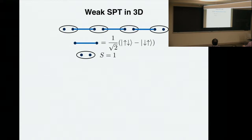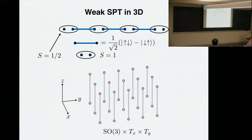I want to interpret the Lieb-Schultz-Mattis theorem as a consequence of a surface anomaly on the boundary of a three-dimensional symmetry-protected topological phase — a weak one, because it requires translation symmetry. The bulk state I have in mind is an array of Haldane chains going along the third direction. As we know, Haldane chains have boundary modes which are exactly spin-1/2. If you look at a surface of this three-dimensional state, you'll see exactly a lattice of spin-1/2. Although the bulk looks very simple — just a stack of Haldane chains — it is indeed a three-dimensional SPT phase if you consider both in-plane translation and spin-rotation symmetry.